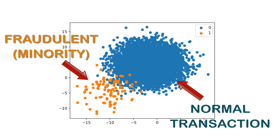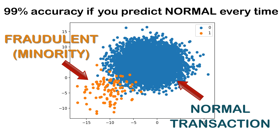If you ignore this imbalance, your model might achieve 99% accuracy by simply predicting normal every time, which is useless in practice. And during training, your model barely gets to learn from the minority class examples.